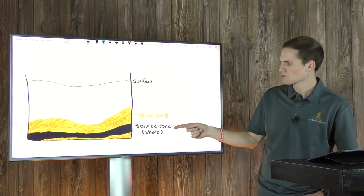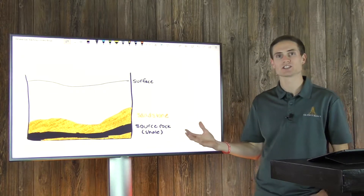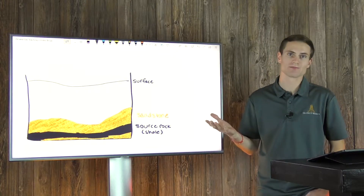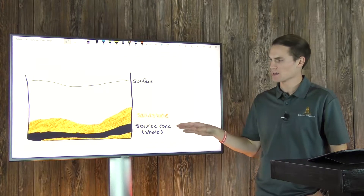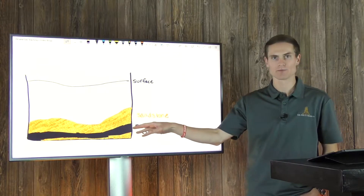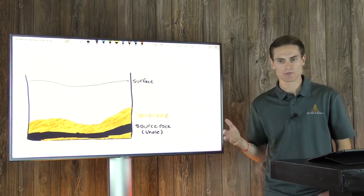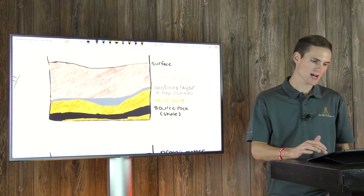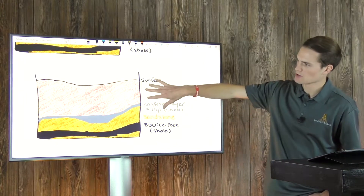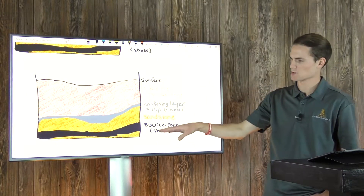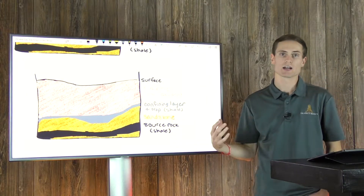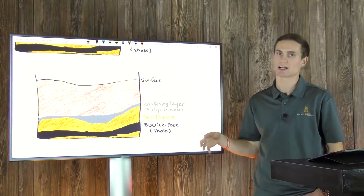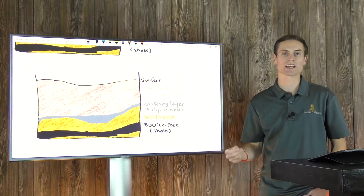Here we have source rock, which we're going to call the shale. Typically, shales are the source rock. Source rock is where the hydrocarbons are sourced from — that's where the organic matter was deposited in this layer. Given time and heat and pressure from the overburden above, this source rock is going to over time generate hydrocarbons. The hydrocarbons are sourced from organic-rich shale.